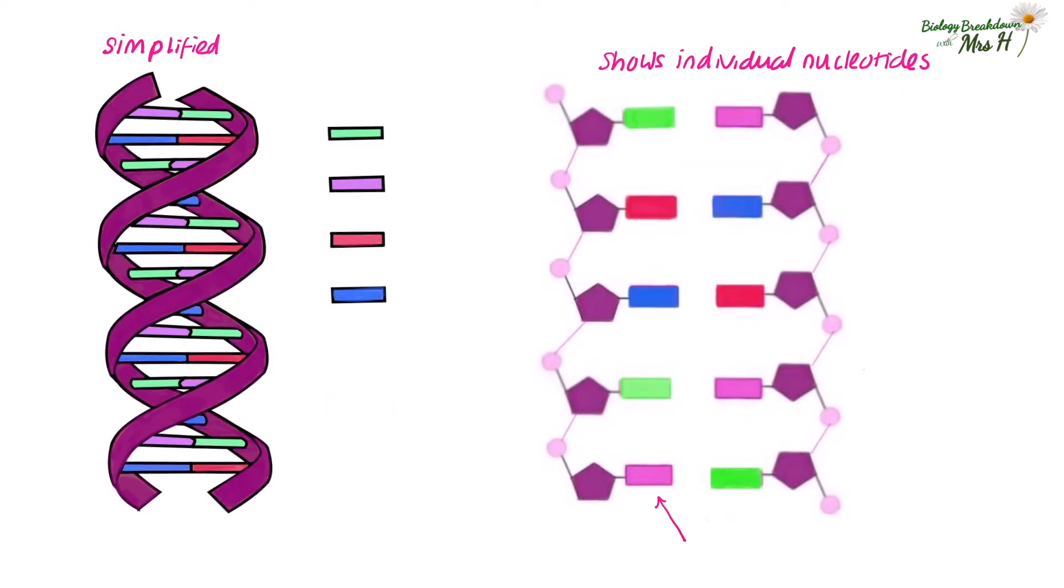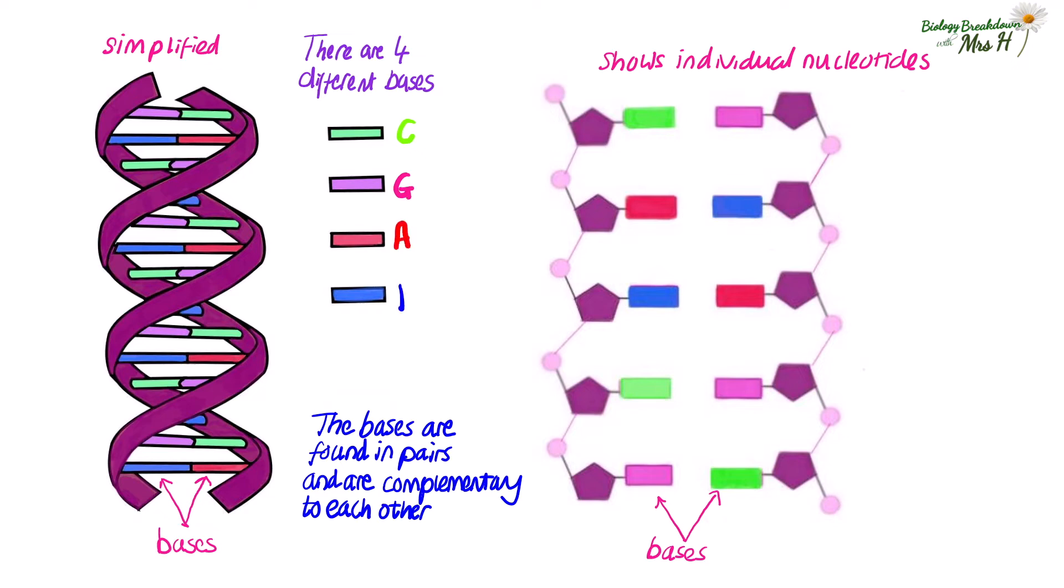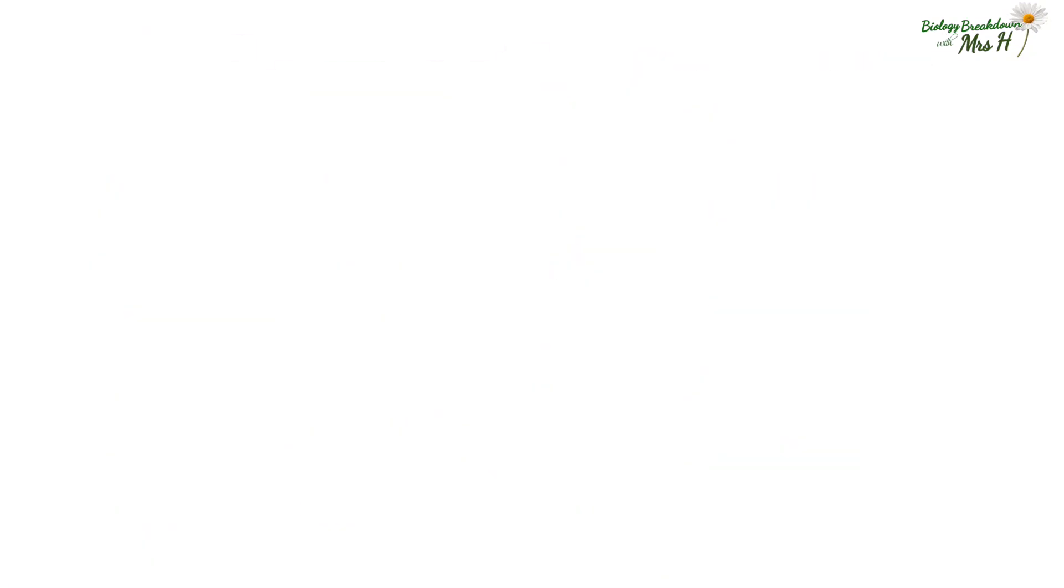The bases are found in pairs in DNA and are complementary to each other. There are four bases C, G, A and T and you can see that they point towards each other in the DNA molecule. The base pairing rules in DNA are that C pairs with G, G with C, A with T and T with A.